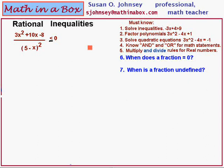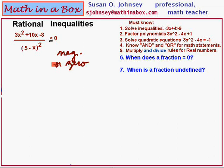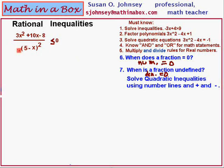Now let's look at our rational inequality. Three x squared plus 10x minus eight is our numerator, and five minus x squared is our denominator. That makes our rational expression. It's called an inequality because we have less than or equal to zero. If something is less than zero, that means it's negative. So we want our expression to be negative or zero. First thing we need to do is factor the numerator: 3x squared plus 10x minus eight.